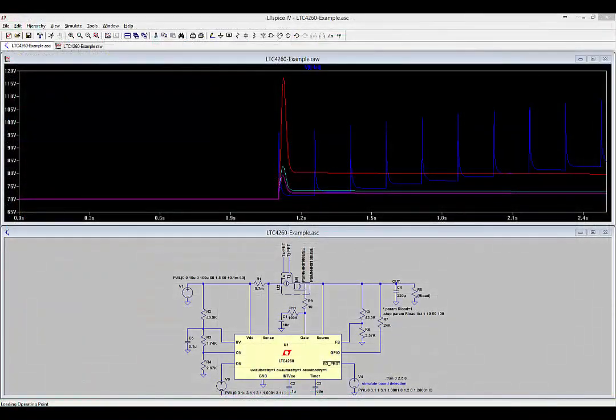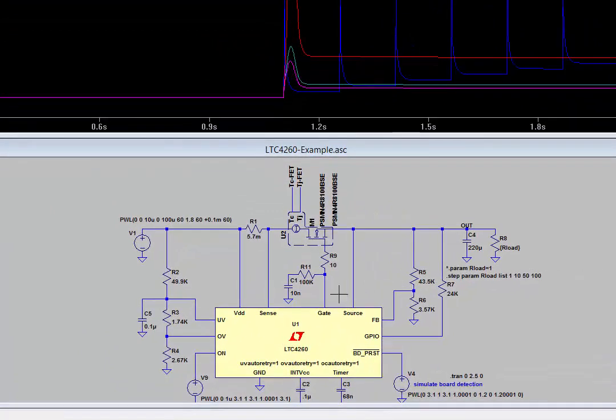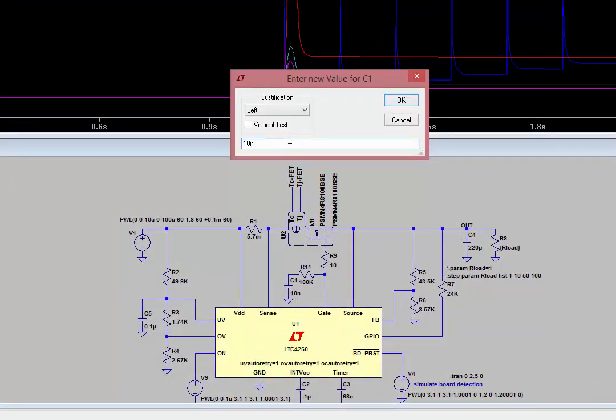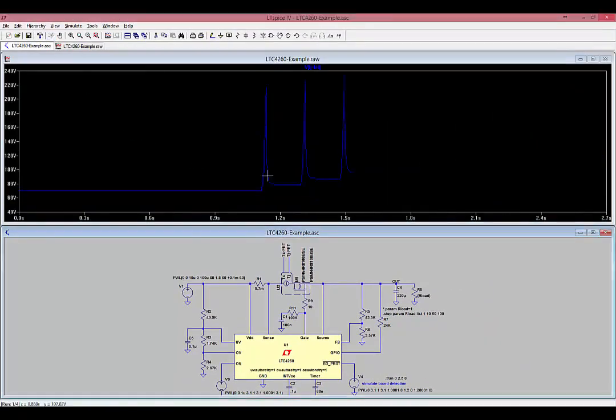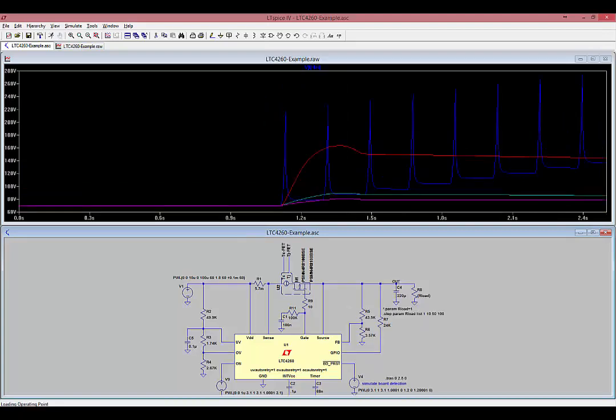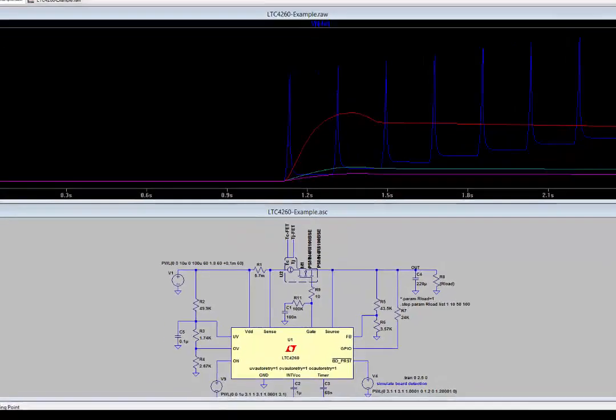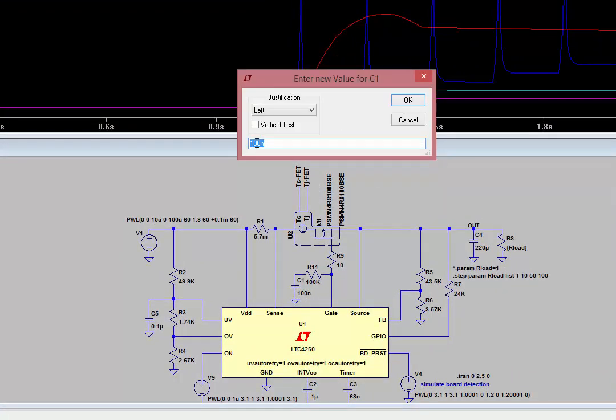Let's try one more test. Change the gate capacitor from 10 nanofarads to 100 nanofarads by right-clicking on the 10 nanofarads and changing it to 100 nanofarads and run the simulation again. Look at the TJ-FET waveform this time. The maximum junction temperature is now almost 300 degrees C when loaded with 1 ohm. Obviously, this is not a good idea. The slow ramp on the gate results in MOSFET heating, but the MOSFET is not yet in current limit where the LTC 4260 timer starts to run.